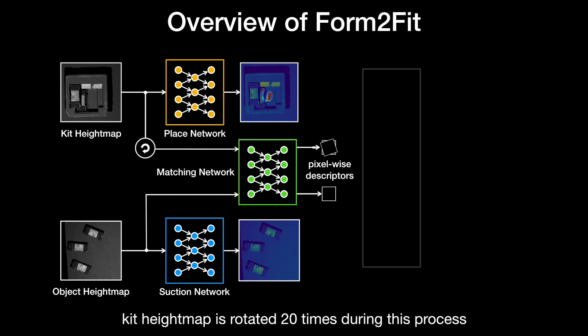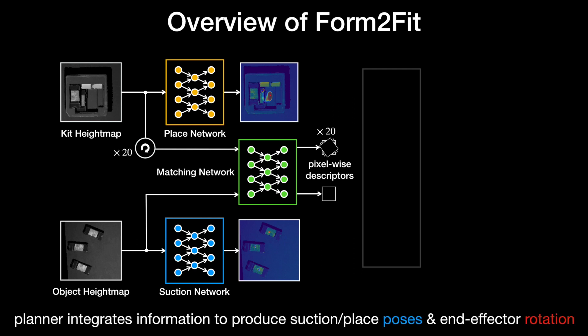The index of the rotation with the most similar kit descriptor informs a change in object orientation between the picking and placing locations. In this way, the matching module associates each suction location on the object to a placing location in the kit and simultaneously infers a change in object orientation between both points.